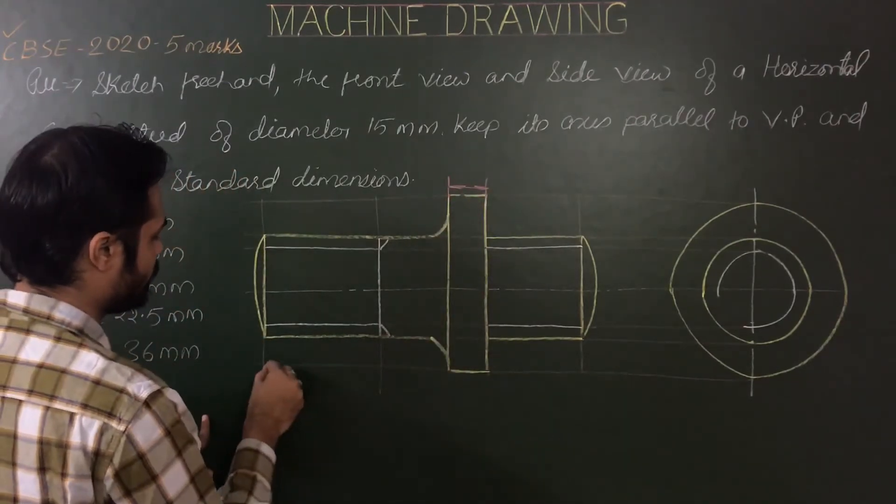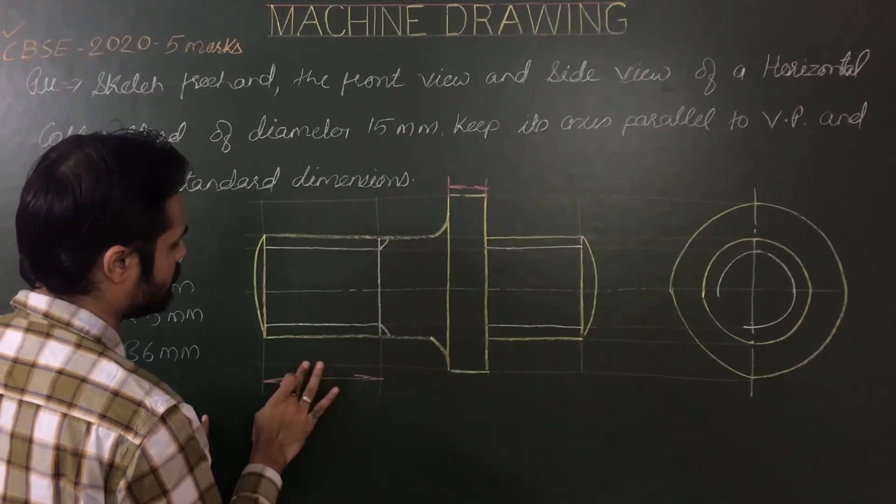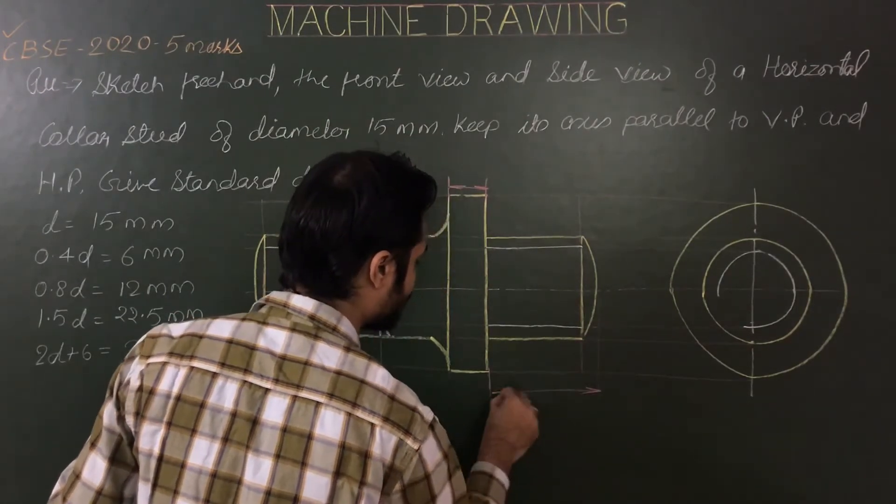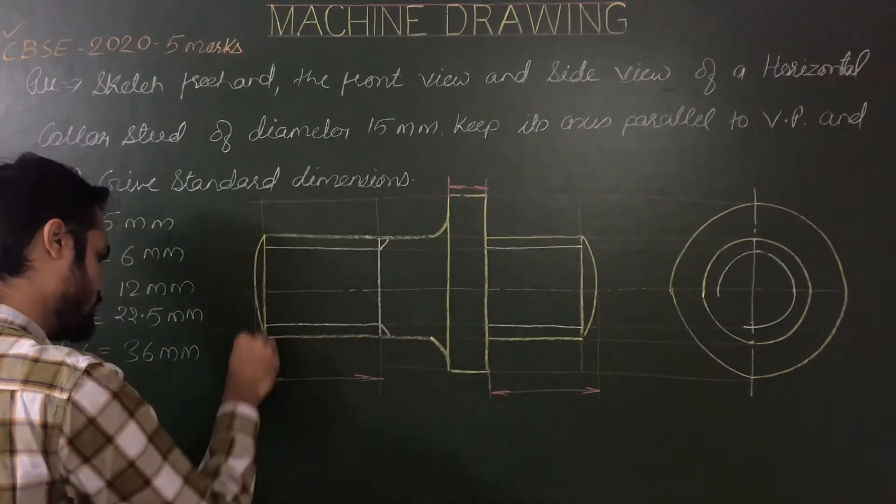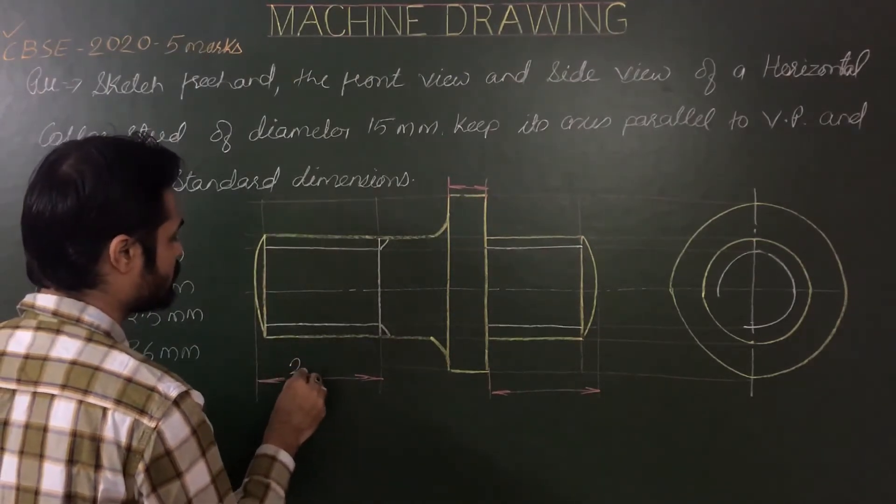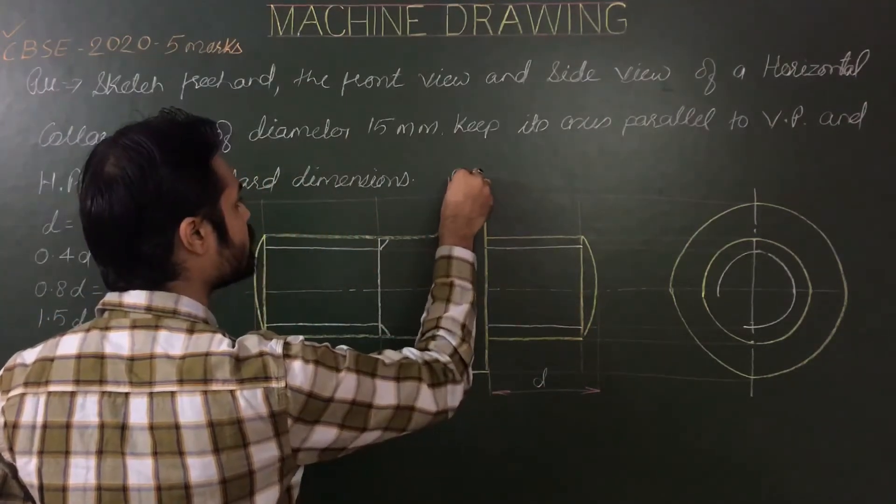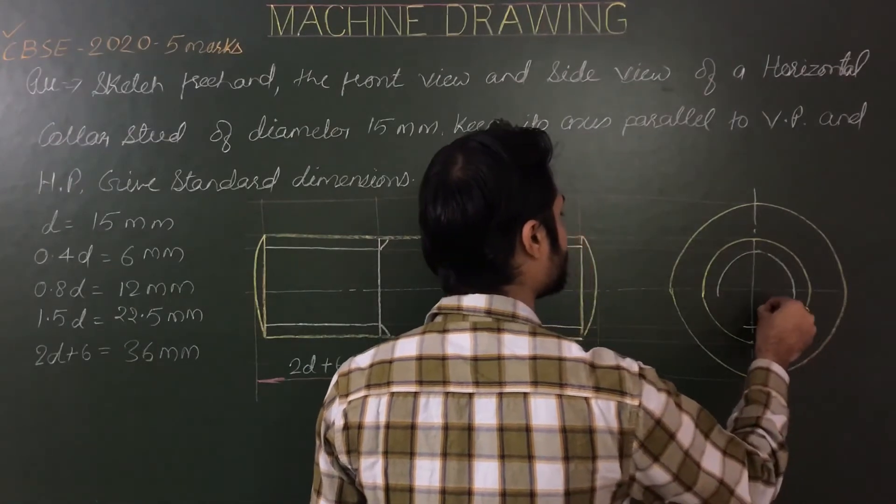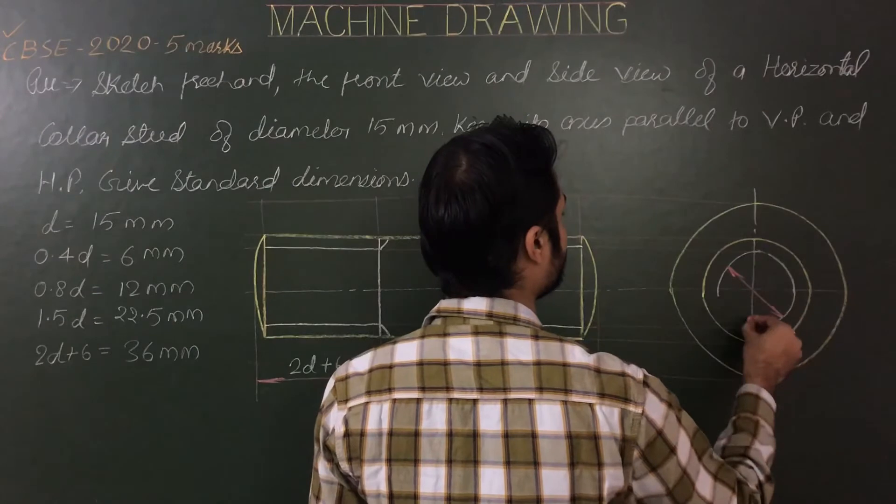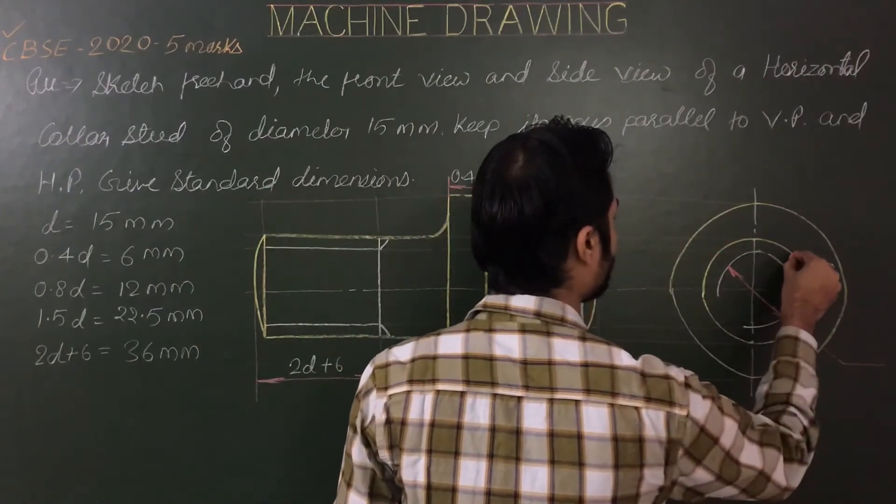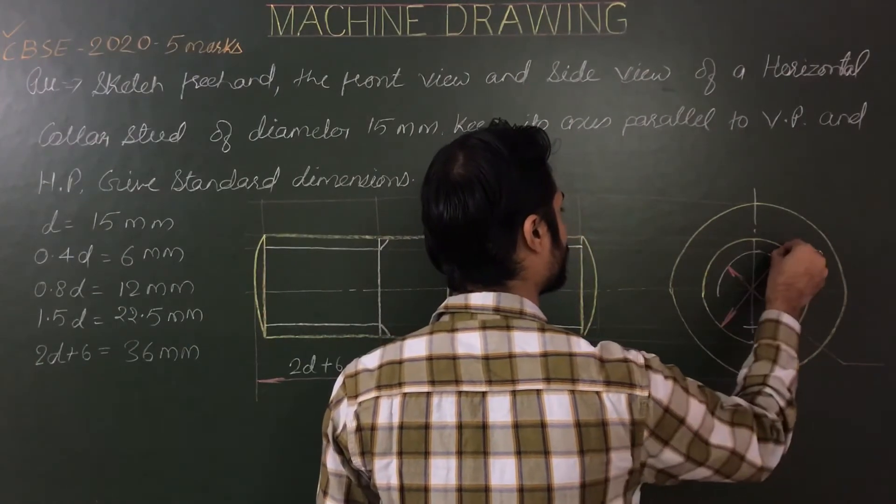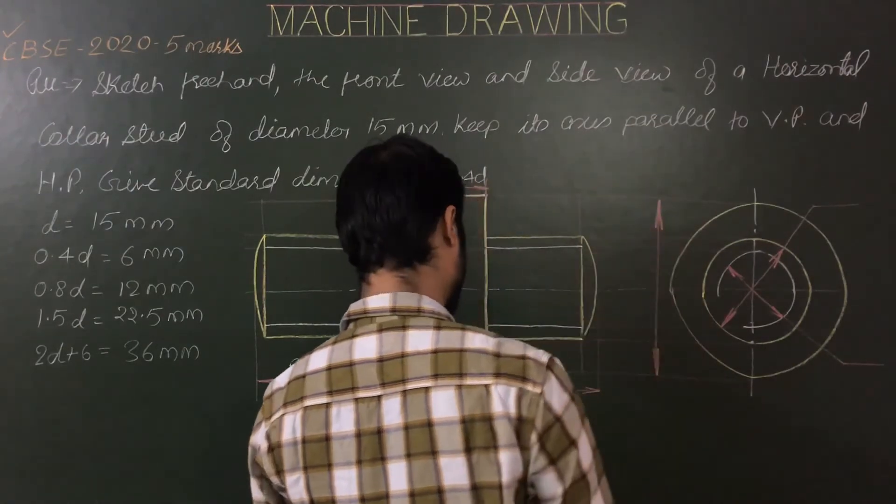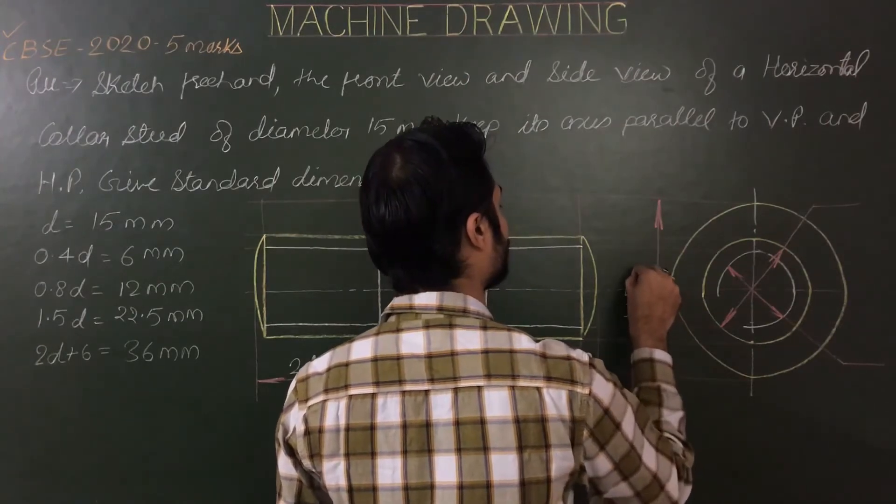Now dimensioning. For dimensioning, show thickness of collar, then length of metal end and length of nut end. You can show up to this point. So this is 2d plus 6, this is d, 0.4 of d, any length. Then diameter of internal and external threads, and last diameter of collar, dia 1.5 of d, dia d, dia 0.8 of d.